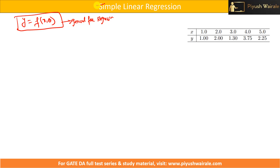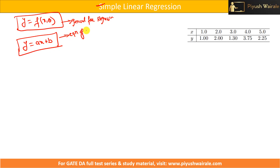What is simple linear regression? In this, we have only one independent variable, and it is represented by y equals to ax plus b. You all know this is the straight line equation. This is what simple linear regression is — the relationship between the independent variable x and dependent variable y is linear, that's why this straight line expression is given.